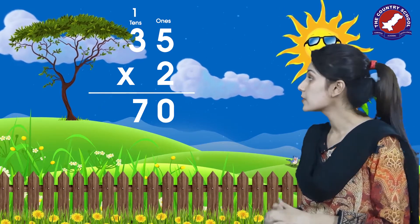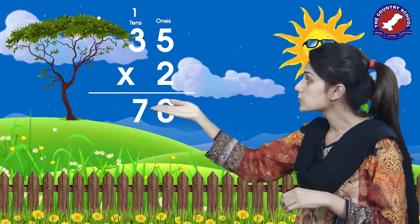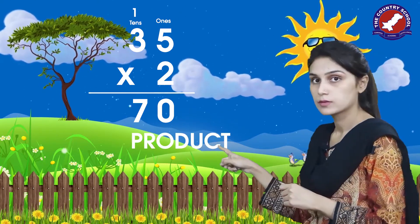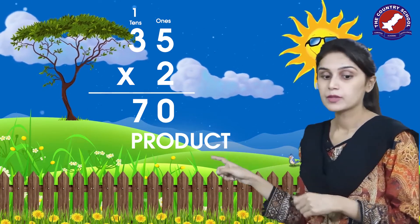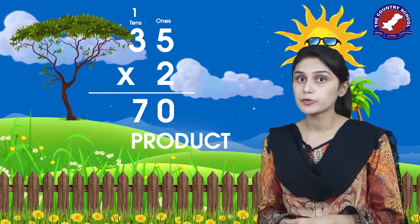So what is our answer altogether? The answer is 70. Always remember: the answer you get after multiplication is called a product. Now you understand multiplication of a two-digit number with regrouping as well.